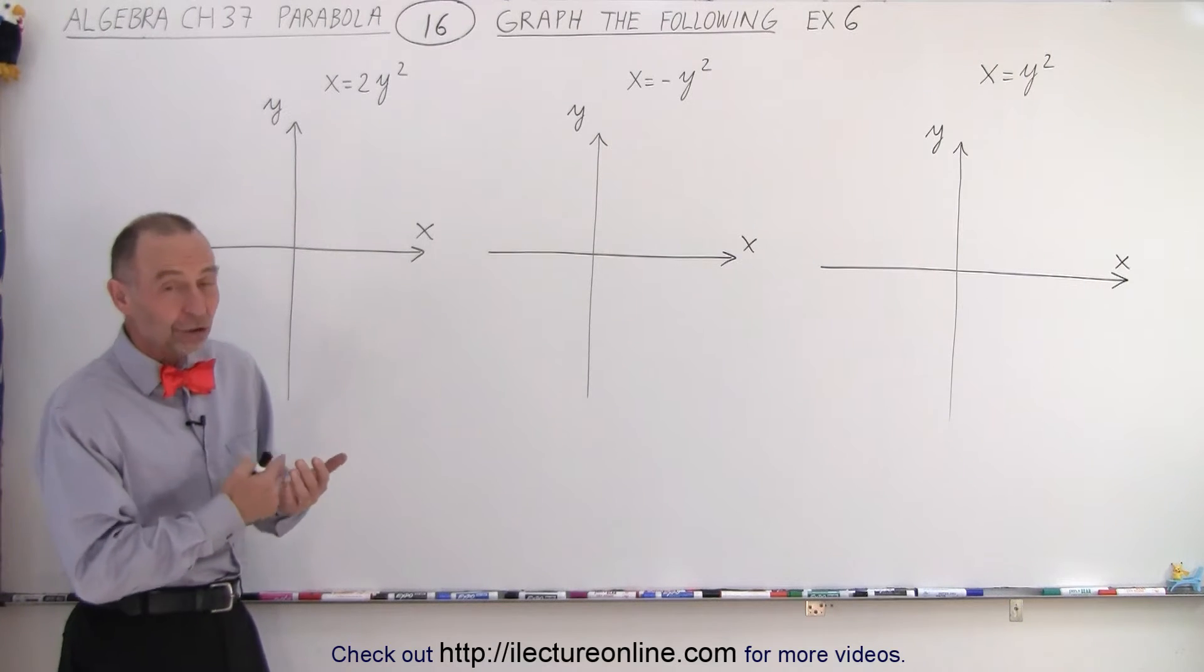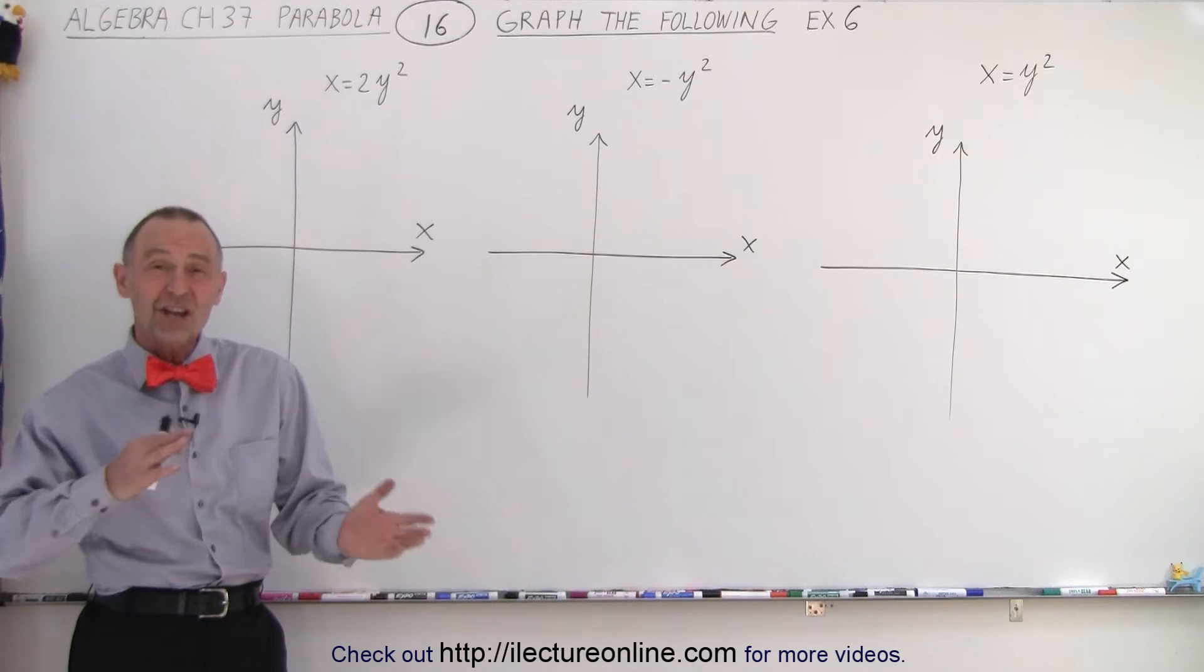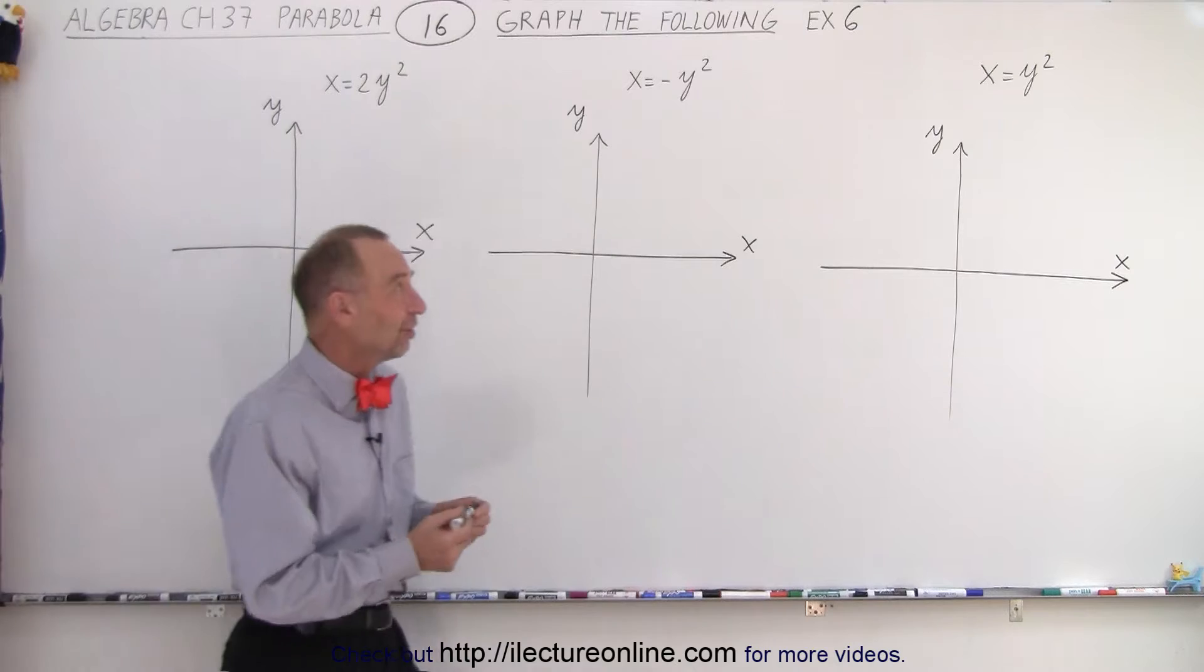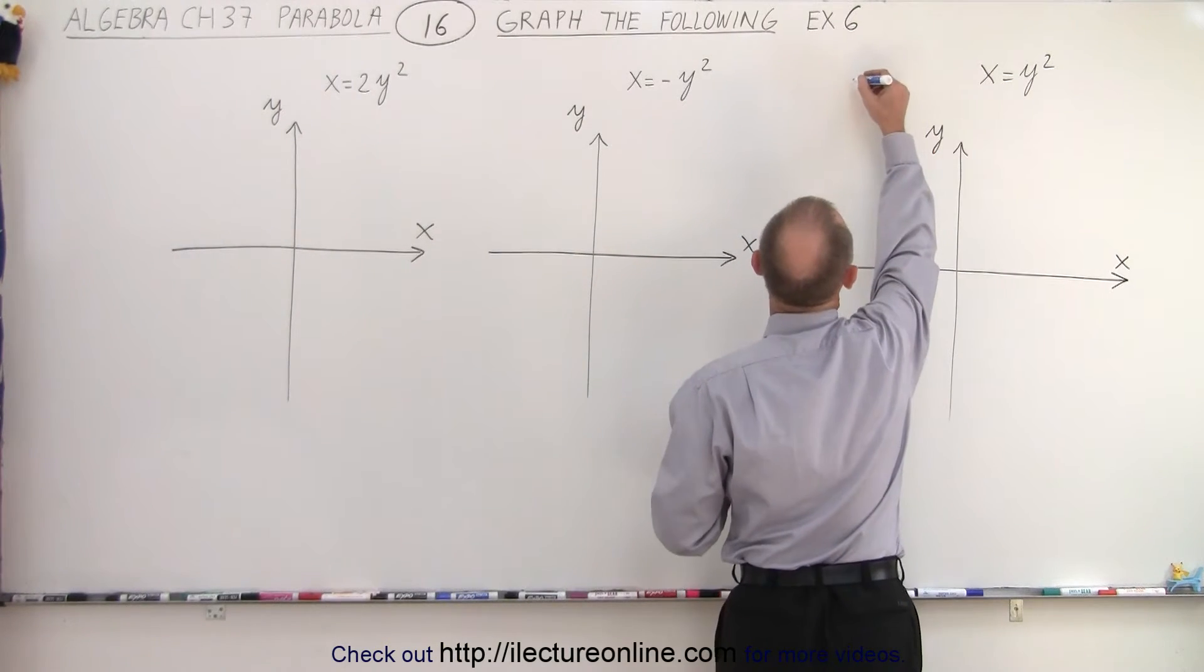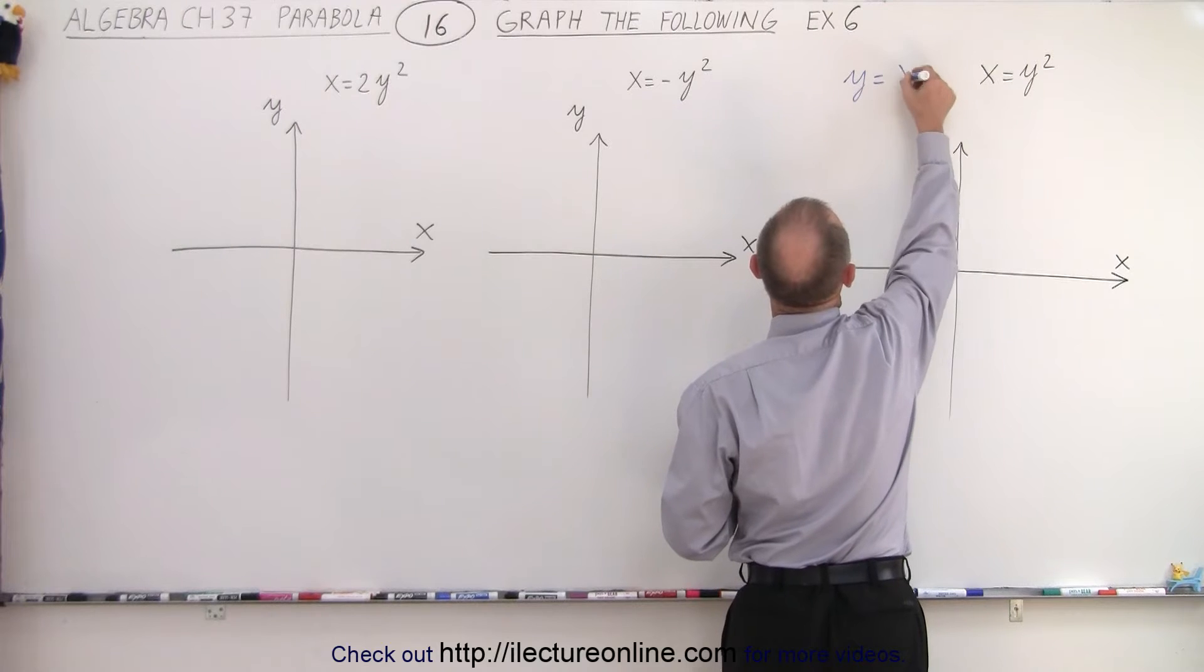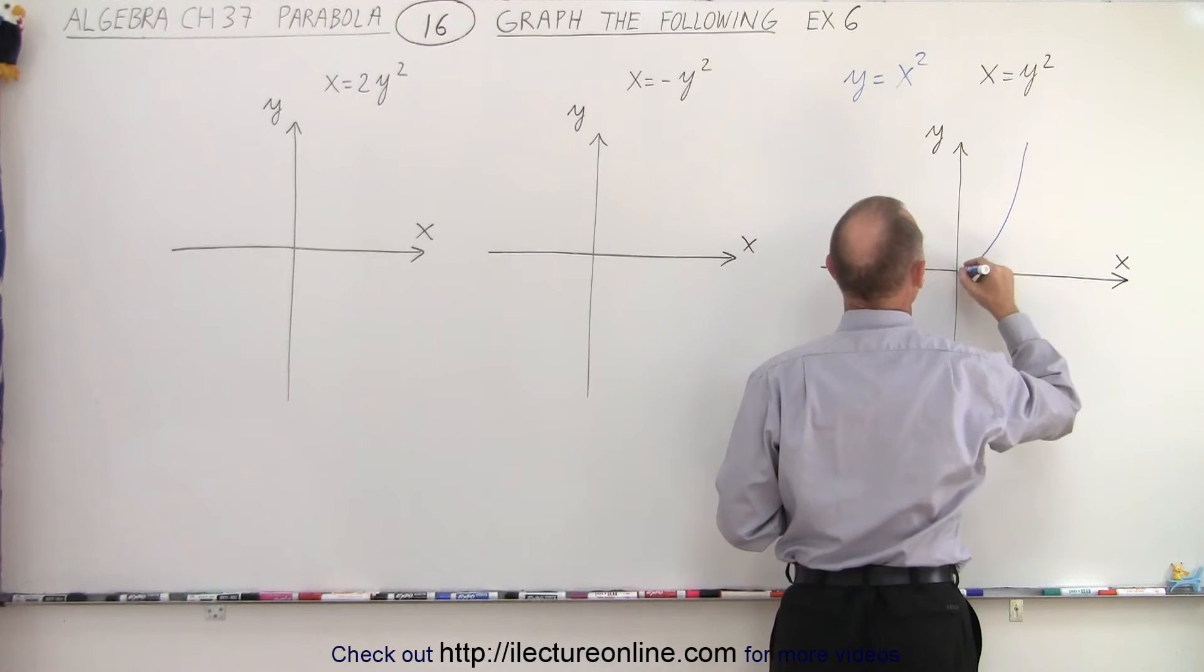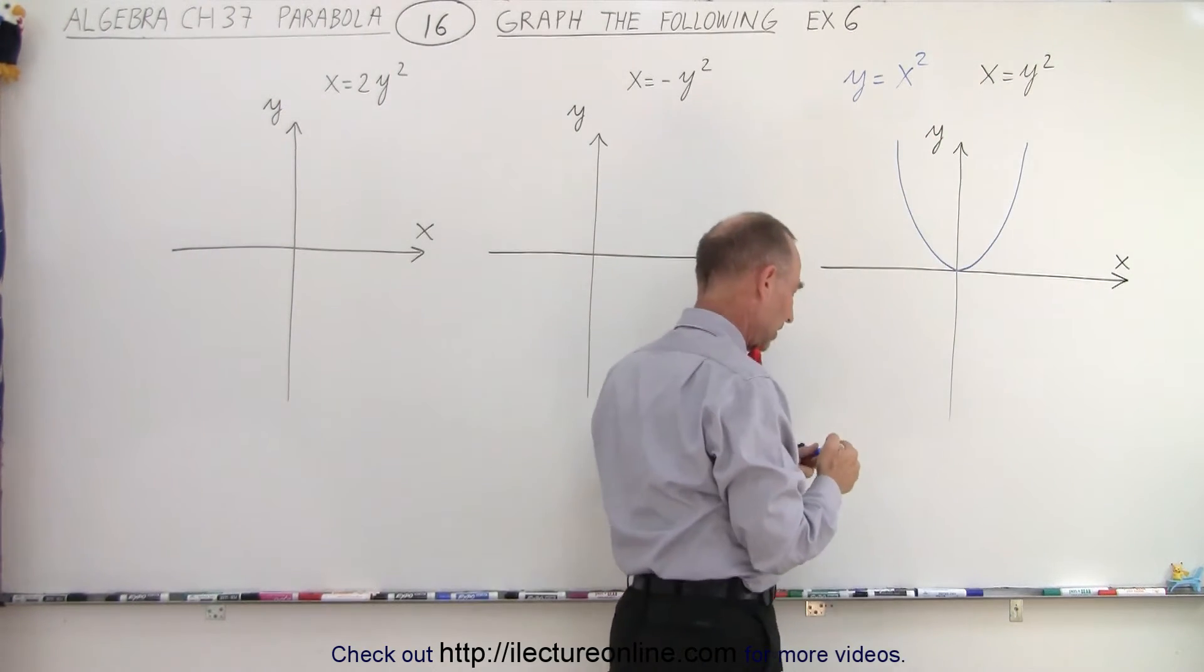But we should still know how to graph them. Essentially what we're doing here is we're exchanging the format from the y-axis to the x-axis. If we had the equation y equals x squared, we know that would be a parabola where the vertex is at the origin and it would open upward towards the positive y-axis like this.